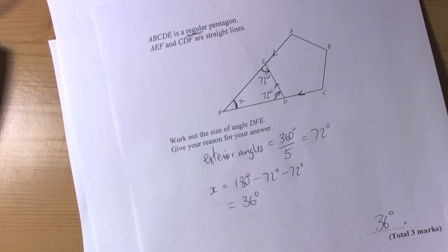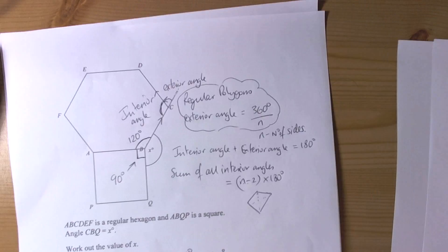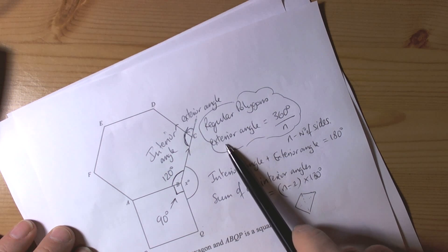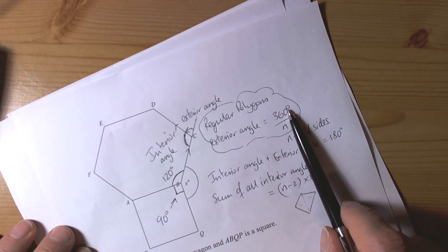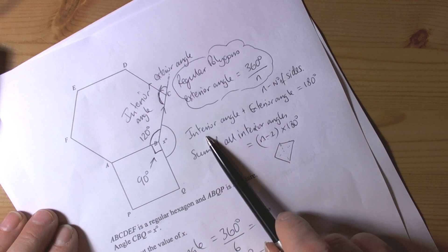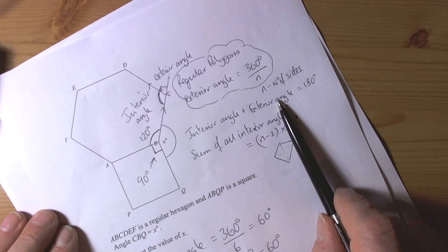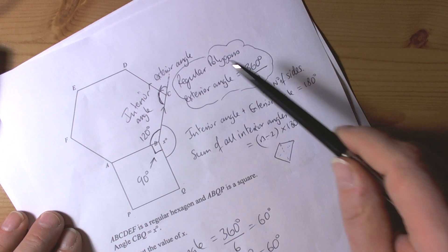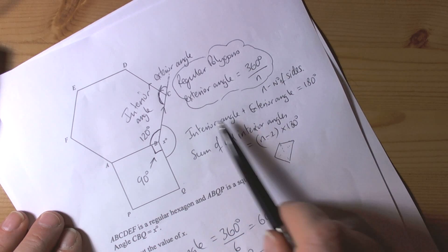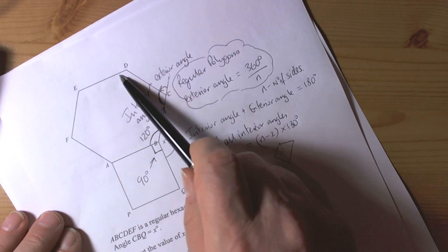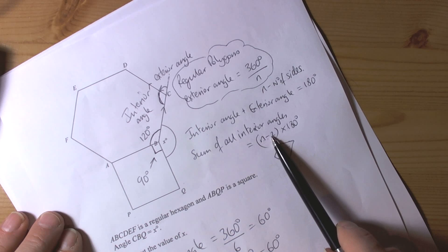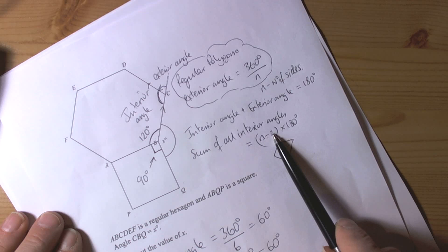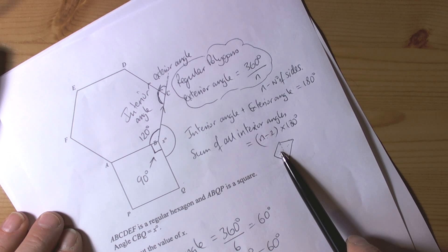To summarise polygons: for regular polygons, the exterior angle always equals 360 degrees divided by n. Interior angle plus exterior angle always equals 180 degrees, because angles on a straight line add up to 180. The sum of all interior angles for any polygon is (n − 2) × 180 degrees, where n − 2 gives the number of triangles you can create inside the polygon.